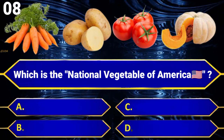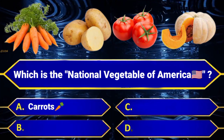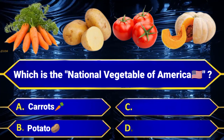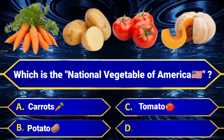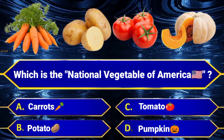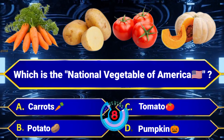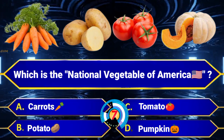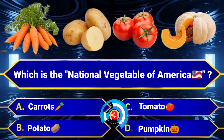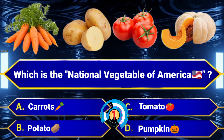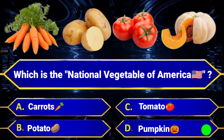Which is the national vegetable of America? Option A, Carrots. Option B, Potato. Option C, Tomato. Option D, Pumpkin. Answer is Option D, Pumpkin.